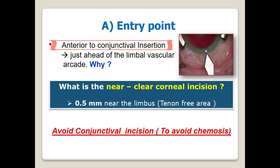Also, being away from the optical center of the cornea means the resultant surgically induced astigmatism will be minimal. However, some surgeons prefer to move 0.5 mm nearer the limbus to get better wound healing. This is called a near-clear cornea incision.